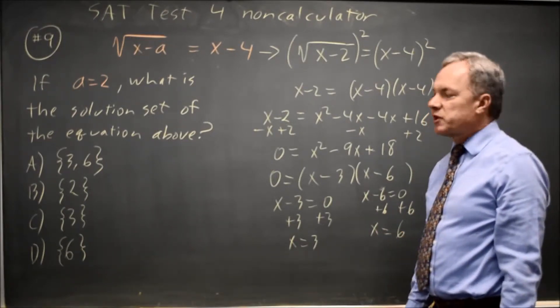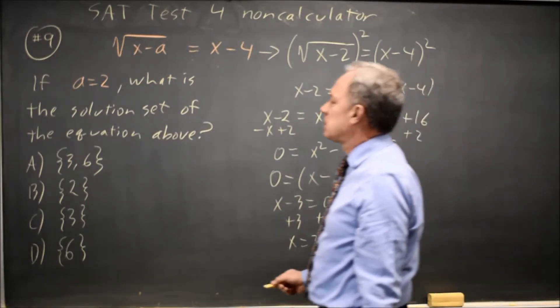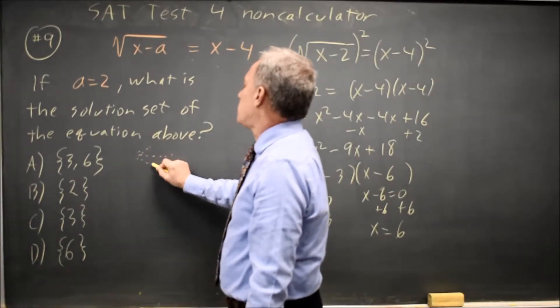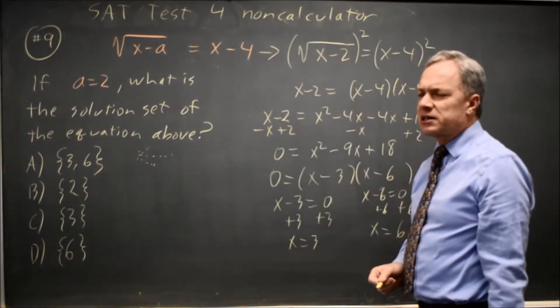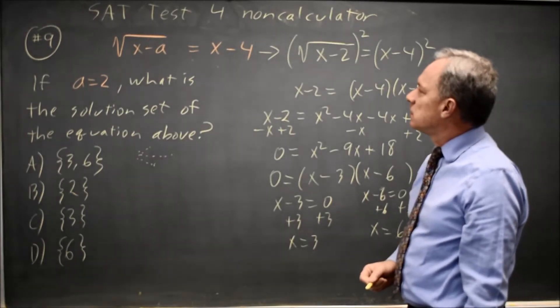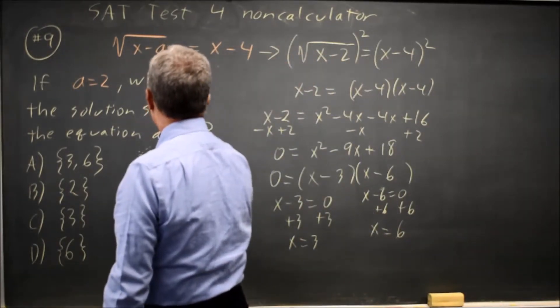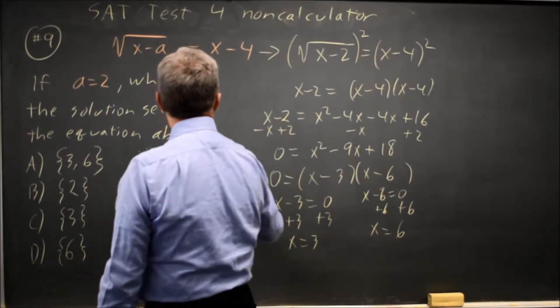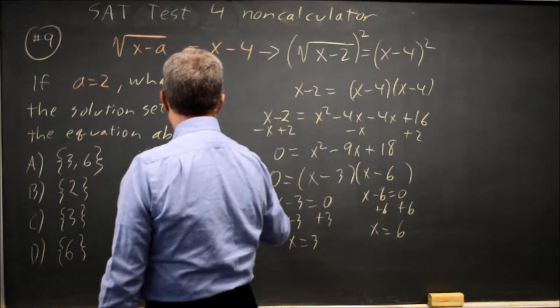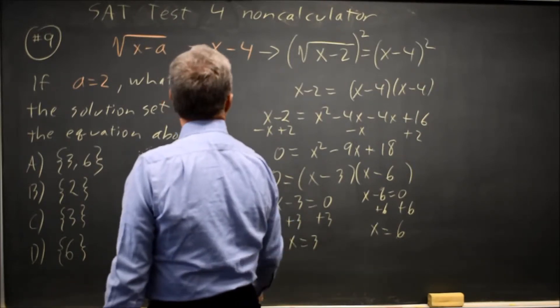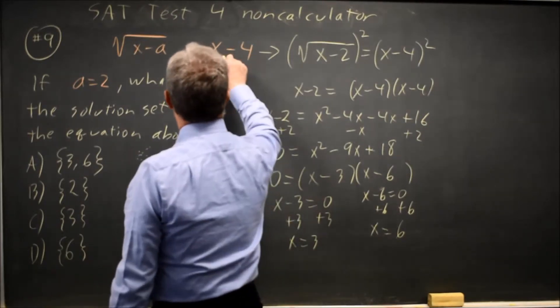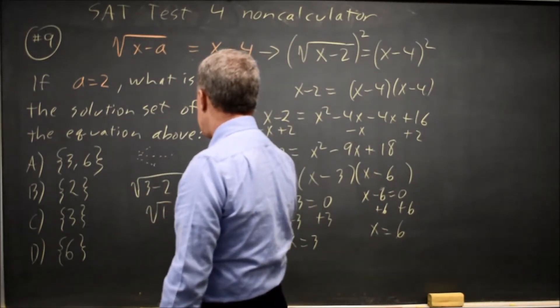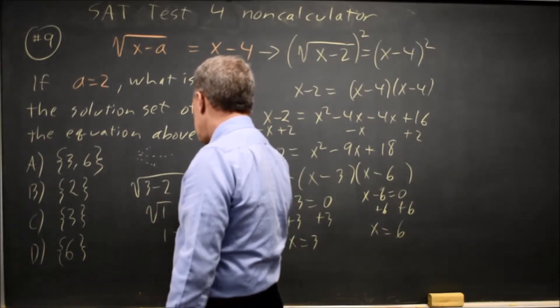Algebraically, I came up with a potential solution set of 3 and 6, which makes me consider this answer choice, but wait, does it actually work? Let's substitute it in. I have square root of x minus 2, let's try x equals 3, equals 3 minus 4, substituting in 3 here. So that would be square root of 1 equals negative 1, that's not true.